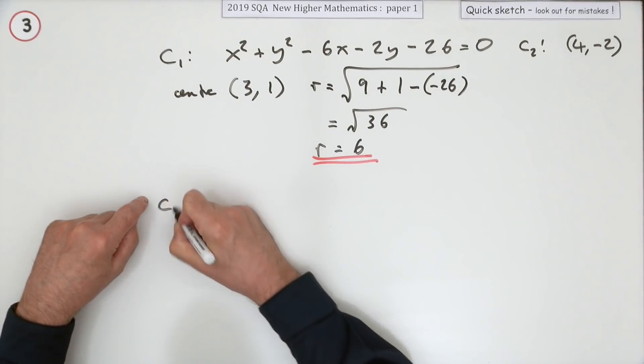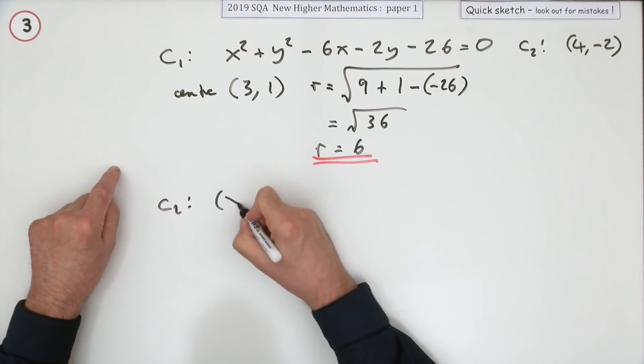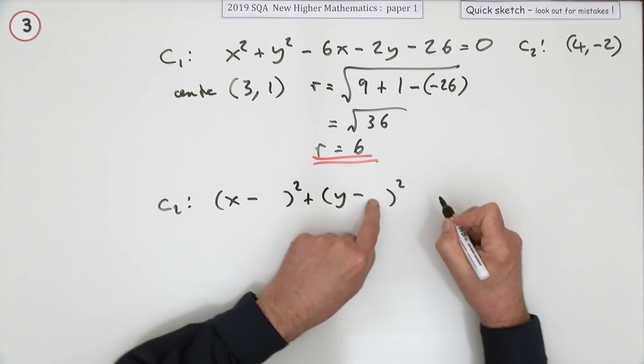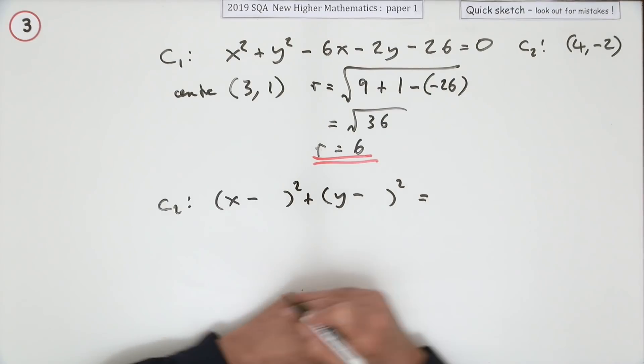Second circle then, what's its equation? It's of the form x minus the x coordinate squared, y minus the y coordinate squared equals the radius squared.